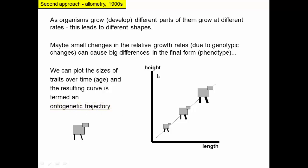For example, if we measure height on one axis and length on another, a juvenile organism gets longer and taller over time. I've drawn it to be isomorphic — the shape is the same throughout because the rate of change of height and length is identical. But genetic changes could cause these rates during development to differ, resulting in a very different shaped final organism, arising from genetic changes.